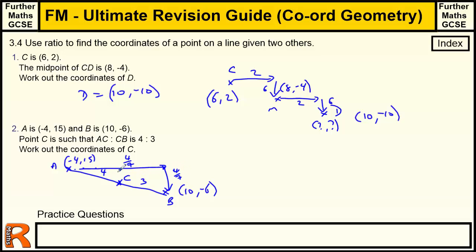So to work that out, we just work out how far across we're going. So we're going from -4 to 10. So let's actually just draw another separate diagram for how far across and down we're going from A to B. So we're going 14 across. And we're coming down from 15 to -6. That's 21 down.